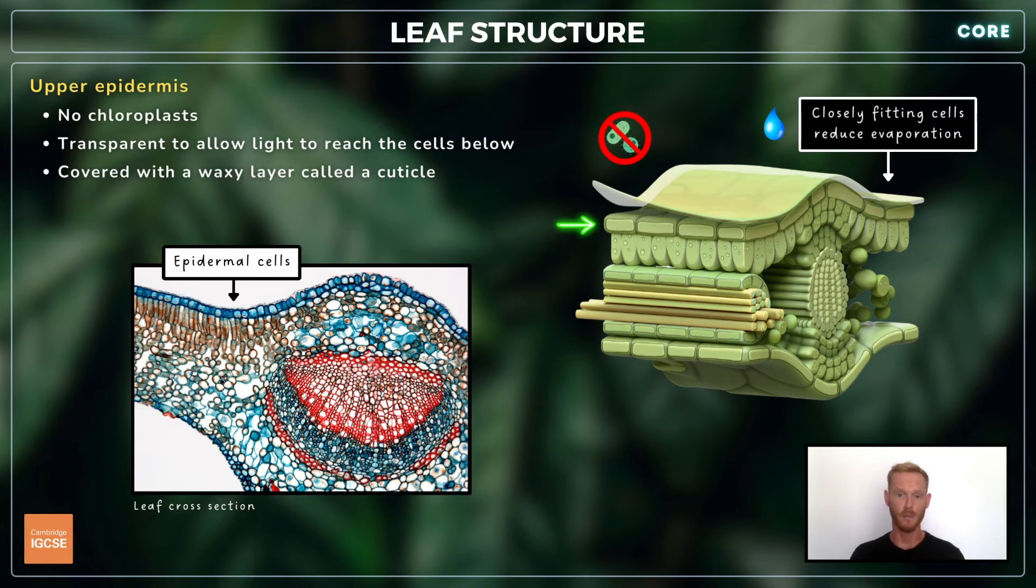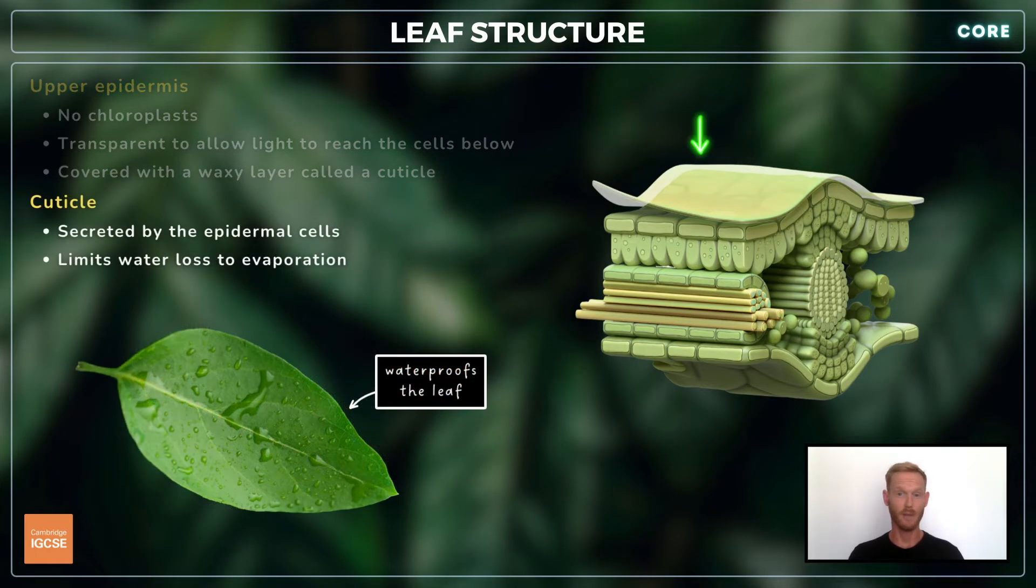They also protect the plant from disease-causing pathogens and organisms and limit water loss to evaporation. The upper epidermis is covered with a waxy layer called a cuticle. It's secreted by the epidermal cells and waterproofs the leaf, limiting water loss.